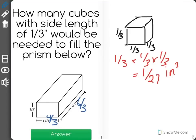48-twenty-seventh. Since we're trying to figure out how many of the little one would go into the big one, that should sound familiar. That should sound like division.